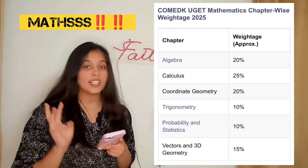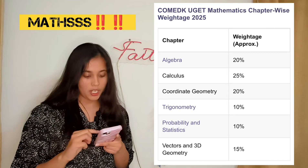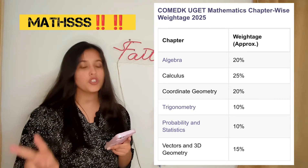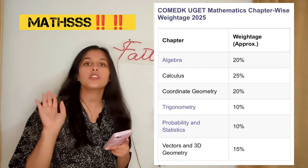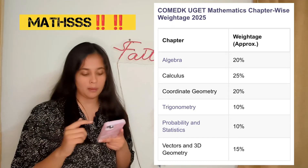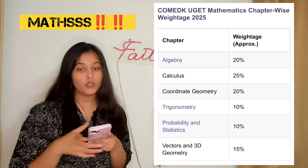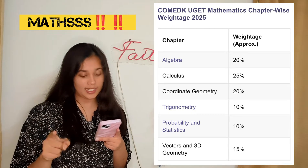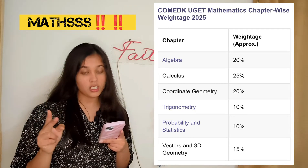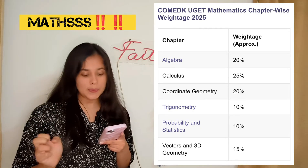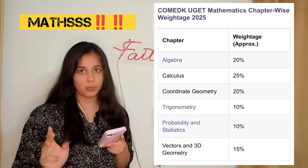The third part is coordinate geometry, which constitutes 20% of the exam portions. Here you mainly have to focus on straight lines, circles, parabola, ellipse, and hyperbola.